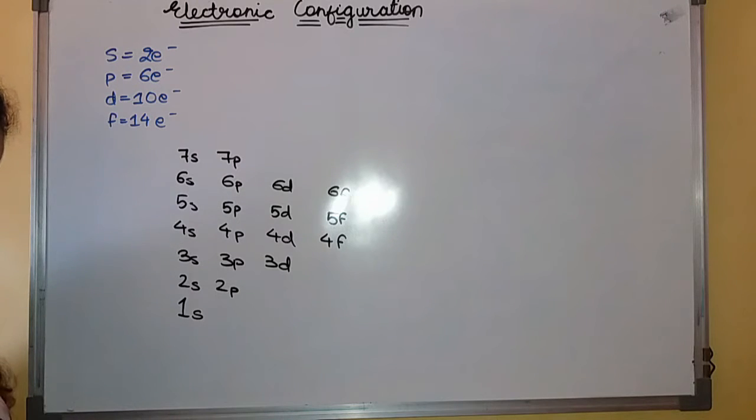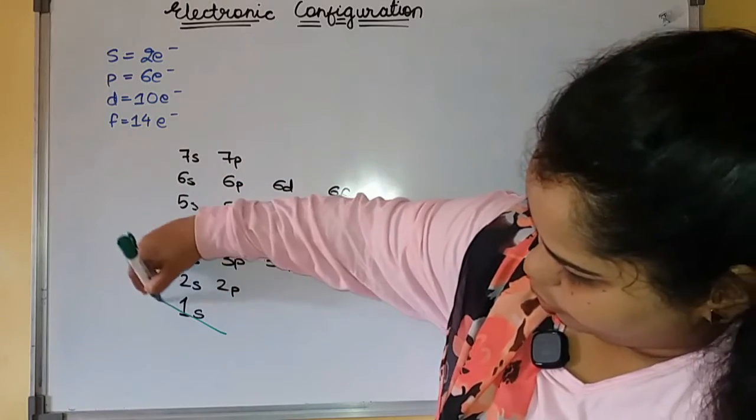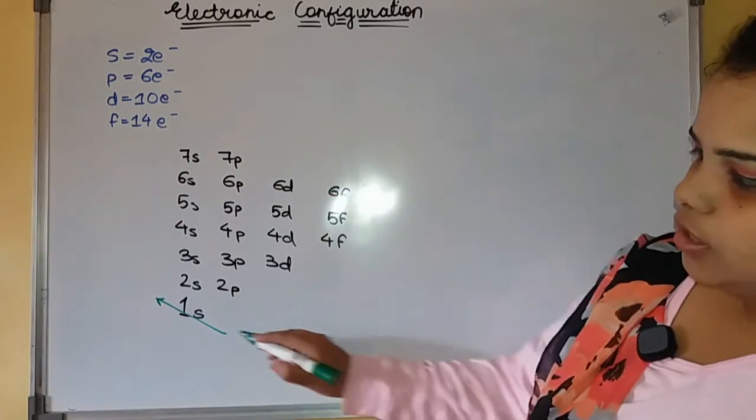Third is the method of filling. For filling of electronic configuration, you have to go in this way. You have to keep your pen in this way. Draw an arrow like this.